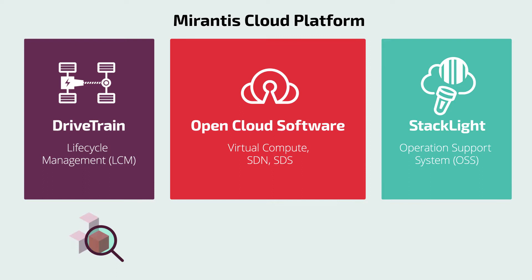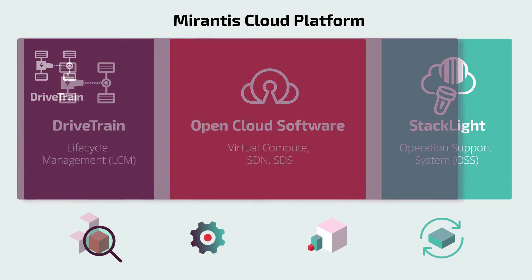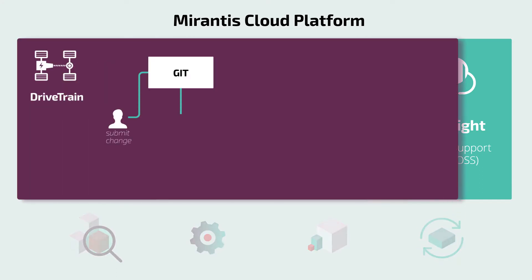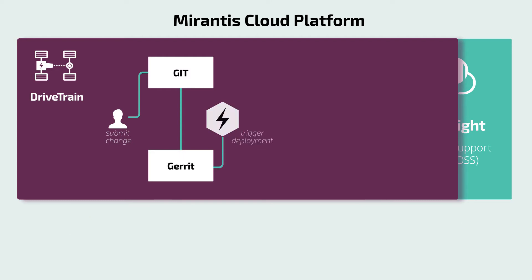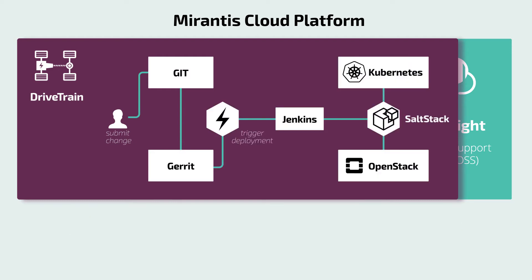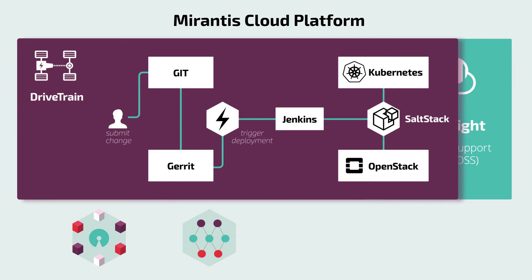MCP clouds are pre-provisioned, deployed, scaled, and regularly updated with Drivetrain — a continuous integration and delivery infrastructure-as-code toolchain that consumes Mirantis-tested and curated open source software and public open source updates, applies formulas and classifiers to resolve dependencies, optimize, and customize configuration, then deploys updates on staging nodes for QA tests, and, all tests passed, deploys to production.